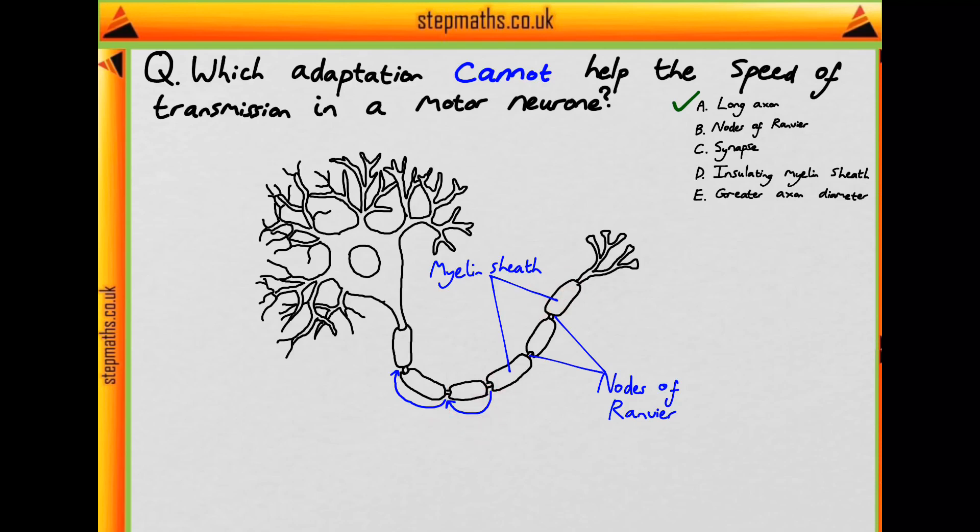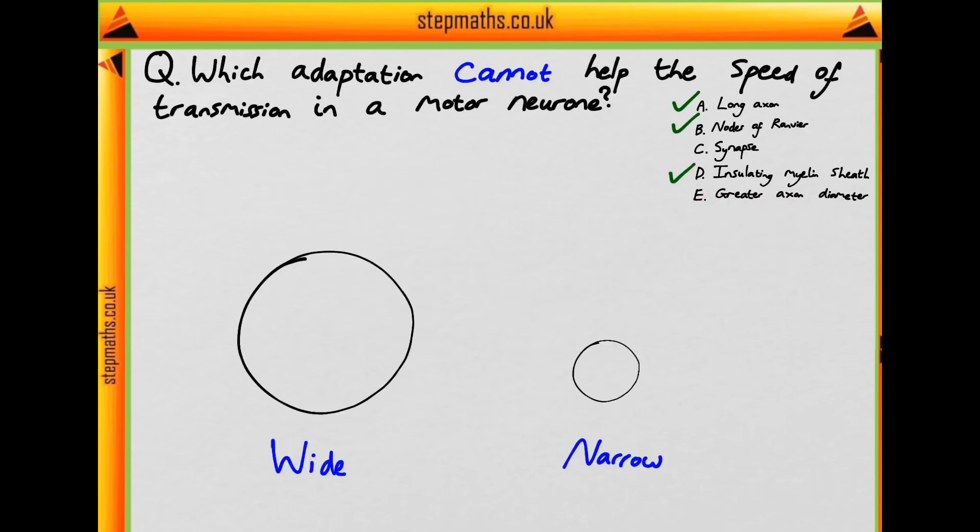And so overall it reduces the distance that the current must flow, and therefore allows the transmission to be faster. Next, we'll address point E. So if we have a greater axon diameter, a wide axon diameter compared to a narrow one, there's less resistance to the flow of ions when the axon has a wide diameter, and this low resistance allows the transmission to be faster.